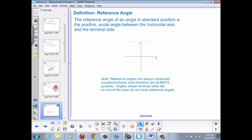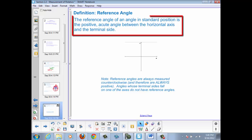Reference angles are very important. We're going to be using them a lot. The reference angle of an angle in standard position is the positive acute angle between the horizontal axis and the terminal side. So what that means is that every reference angle comes off the horizontal axis.